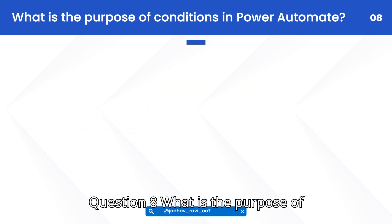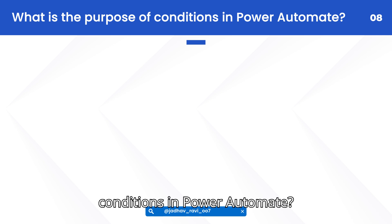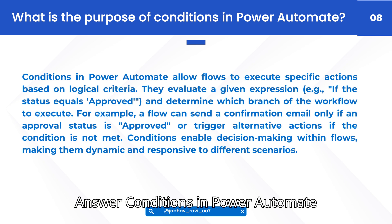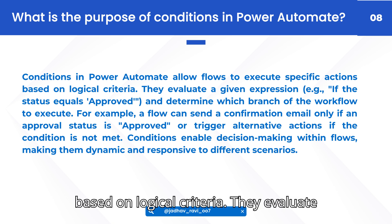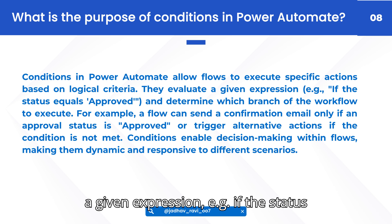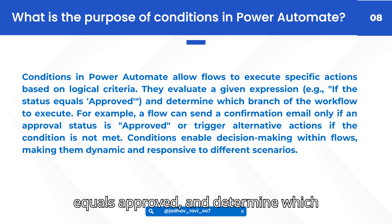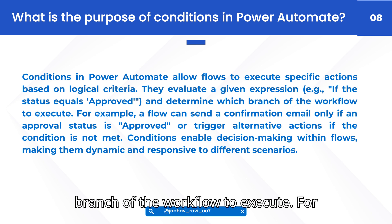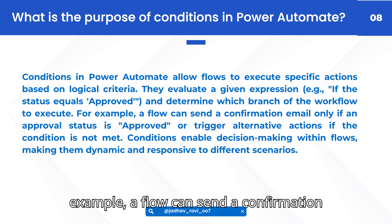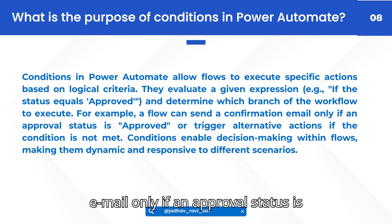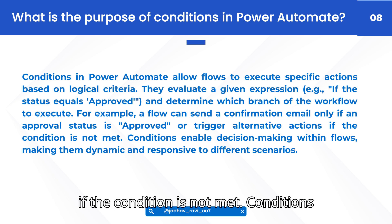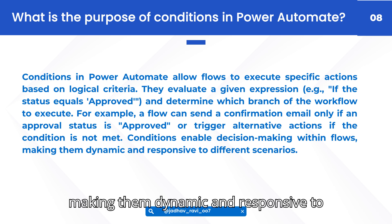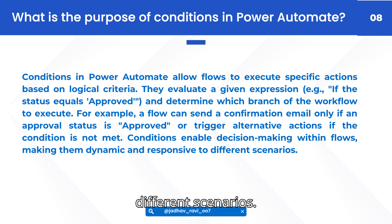Question 8: What is the purpose of conditions in Power Automate? Answer: Conditions in Power Automate allow flows to execute specific actions based on logical criteria. They evaluate a given expression, e.g., if the status equals approved, and determine which branch of the workflow to execute. For example, a flow can send a confirmation email only if an approval status is approved, or trigger alternative actions if the condition is not met. Conditions enable decision-making within flows, making them dynamic and responsive to different scenarios.